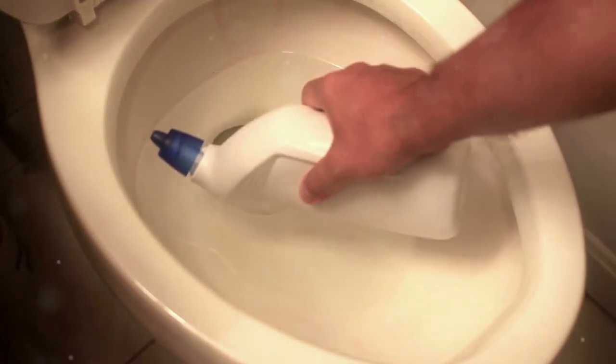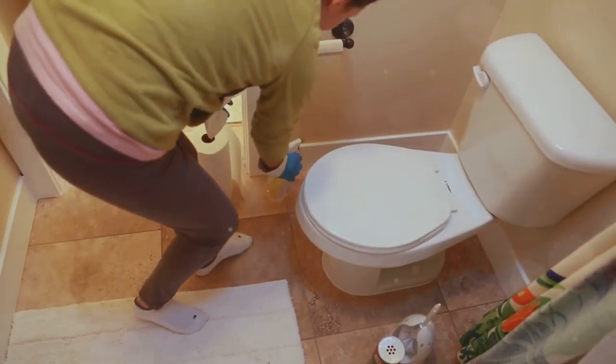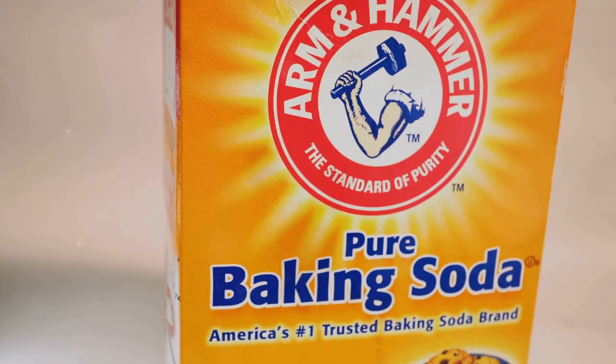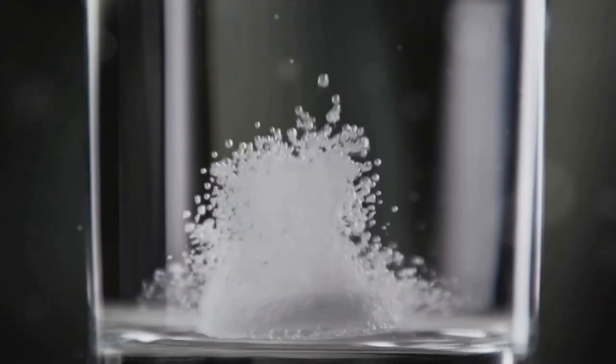Pour about a cup of white vinegar into the toilet bowl, let it sit for a minute. Then, sprinkle a handful of baking soda around the bowl. You'll see some fizzing action, that's the magic happening.